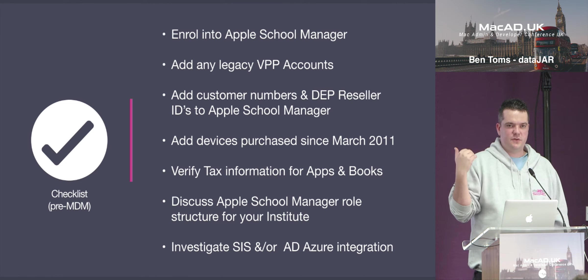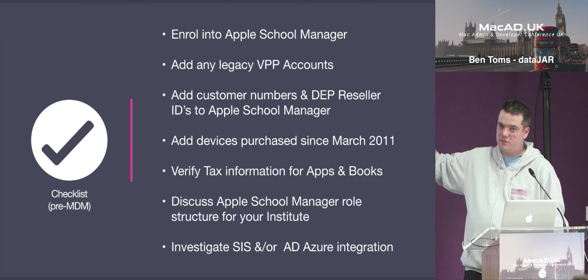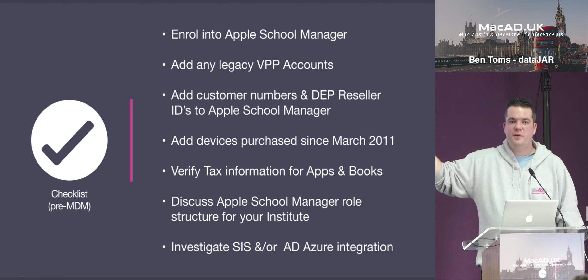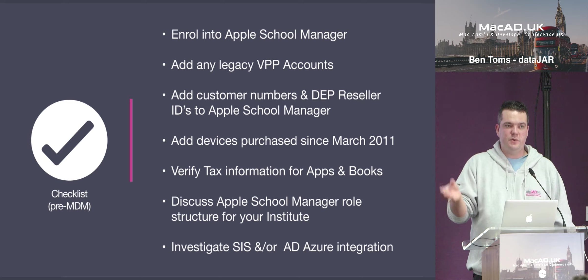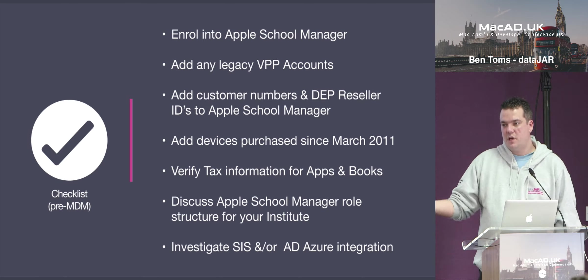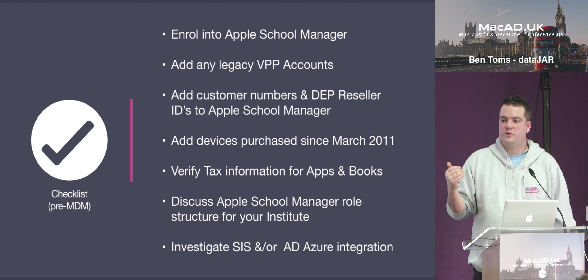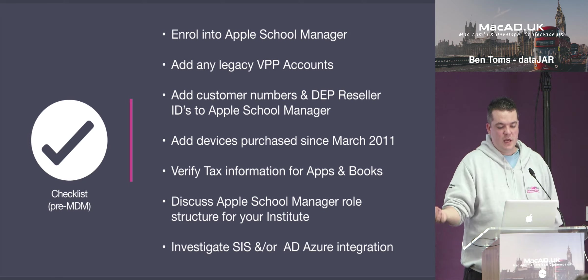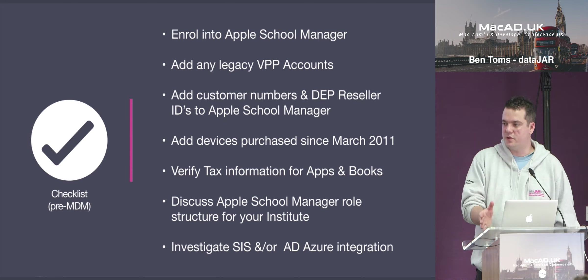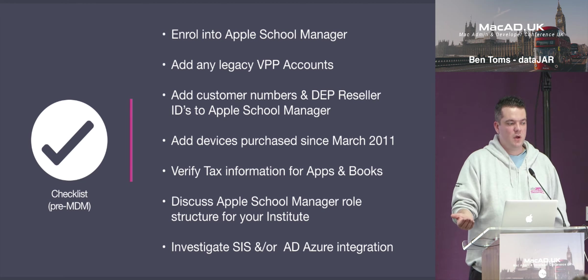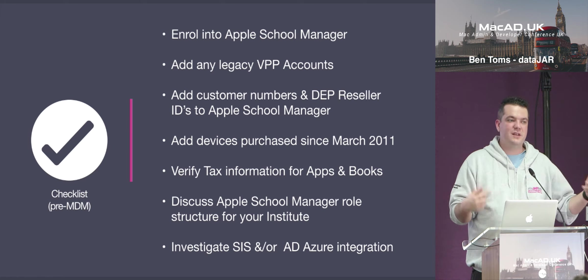Apple put new emojis in iOS updates and everybody wants to update on day one, so make sure your environment is ready for that. Pre-MDM, here's a rough checklist: join Apple School Manager or upgrade from DEP/VPP if you were enrolled after February 1st 2014. If you have any previous VPP accounts, add them — there's documentation on Apple's School Manager help page. Make sure you've got your customer numbers and DEP reseller IDs added to School Manager, speak to your resellers about adding legacy devices purchased since March 2011, verify your tax information for apps and books, and look at the structure of Apple School Manager in regards to roles.